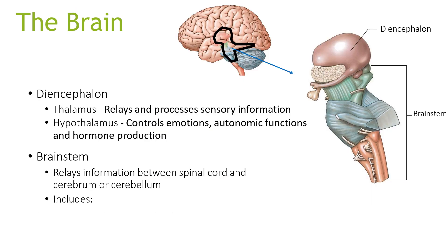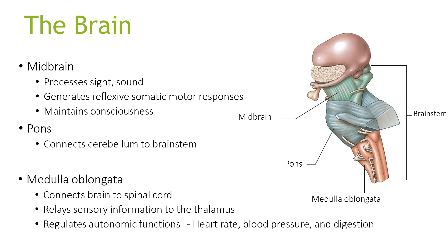Looking specifically at the diencephalon: the thalamus relays and processes sensory information. The hypothalamus controls emotions, autonomic functions, and hormone production. The brain stem relays information between the spinal cord and cerebellum. The midbrain processes sight and sound, generates reflexive somatic motor responses, and maintains consciousness. The pons connects the cerebellum to the brain stem, and the medulla oblongata connects the brain to the spinal cord, relays sensory information to the thalamus, and regulates autonomic functions such as heart rate, blood pressure, and digestion.